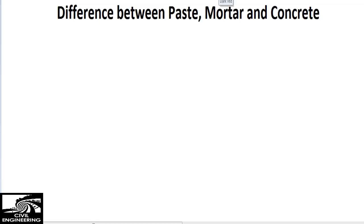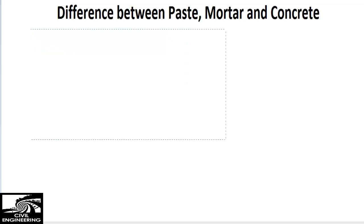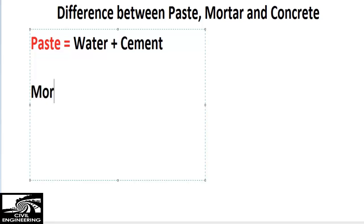It's very important to know about these three. First, I'm showing you what is paste. Paste is basically the composition of water and cement — water plus cement. This we call paste.